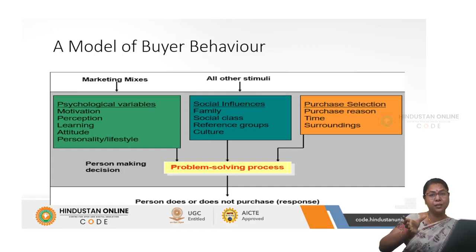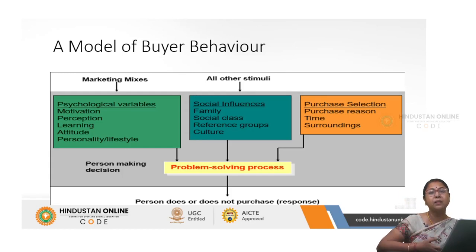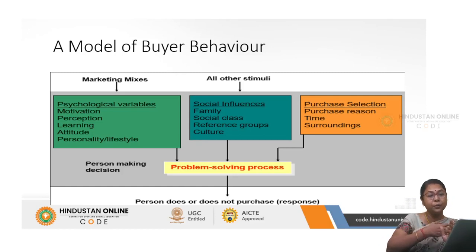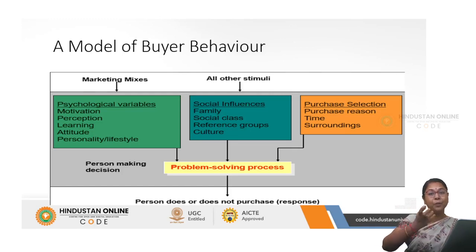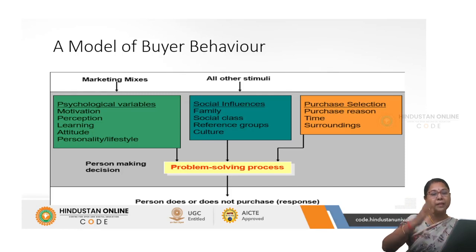Apart from these marketing mixes, the second attribute we can consider is other stimuli — the social influences. What are social influences? The family influence, social class influence, reference groups, and the culture of the person involved in buying. The family, society, friends group, and other social groups all influence people towards buying a particular product, brand, or service.